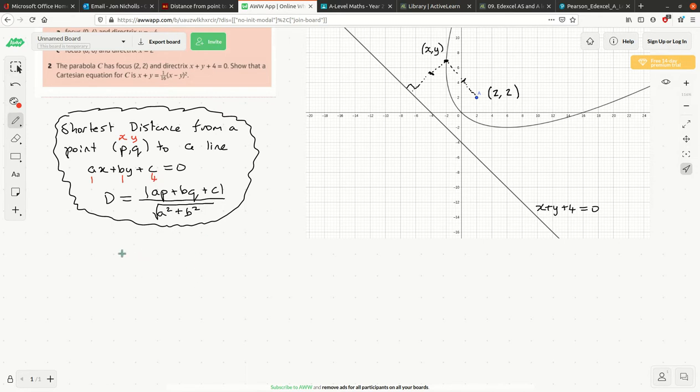So what does that give me? That gives me distance equals the modulus of X plus Y plus 4 over square root of 1 squared plus 1 squared, which is clearly root 2. OK, so that's the distance from here to here. What I've worked out there, let me put it on the diagram. That's D.